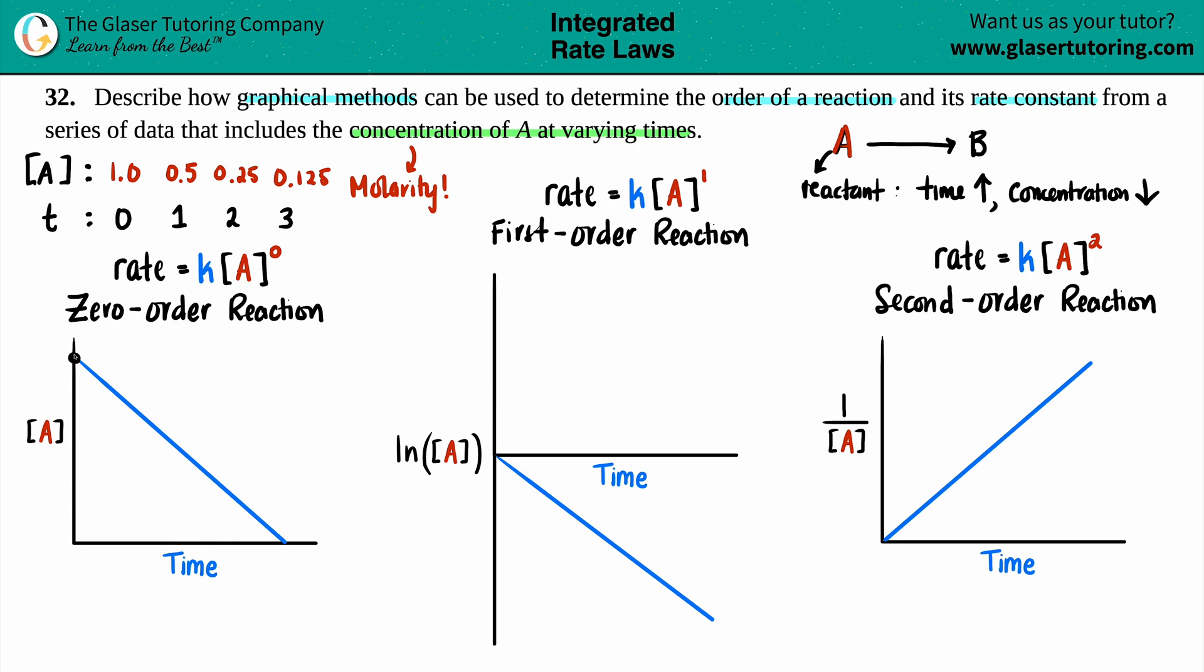And I plot them. Let's just say that this was 1, this is 0.5, then we have 0.25, and then we have 0.125. And I can make a straight line. Woohoo! If your concentration comes out with a straight line, that is a zero order reaction. And your rate constant would be rate equals K times the concentration of A to the zero. And remember, anything that's raised to the zero is just one. So this is basically the same thing as just saying rate equals K.